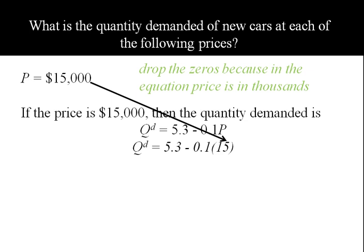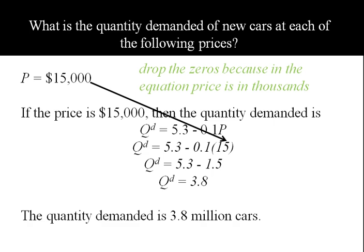What's left to do is work through the math. So we'll take 0.1 times 15, and then we'll take 5.3 minus 1.5, giving us a final answer of 3.8. This means the quantity demanded is 3.8 million cars when the price is $15,000.